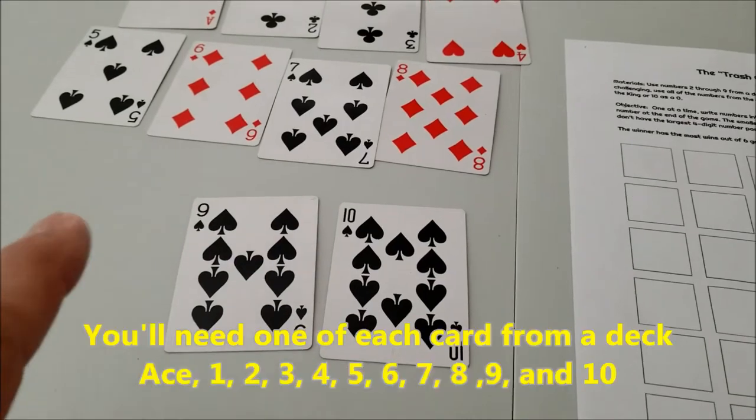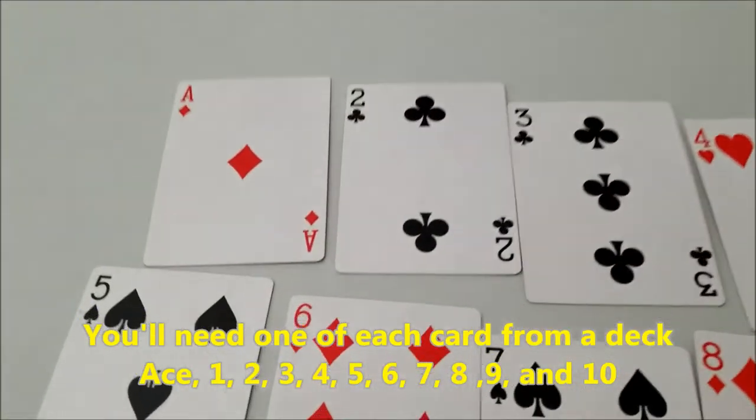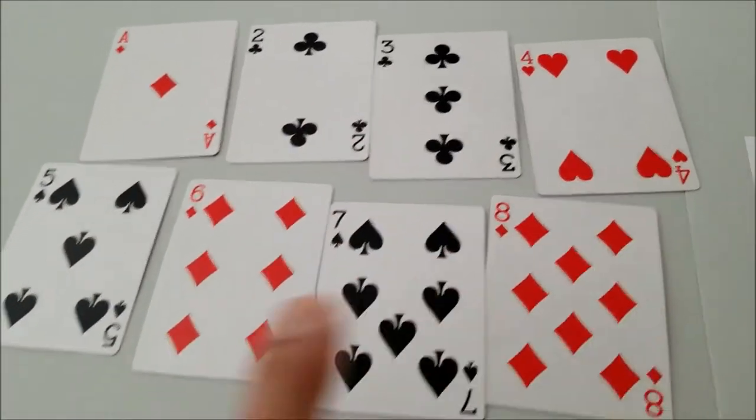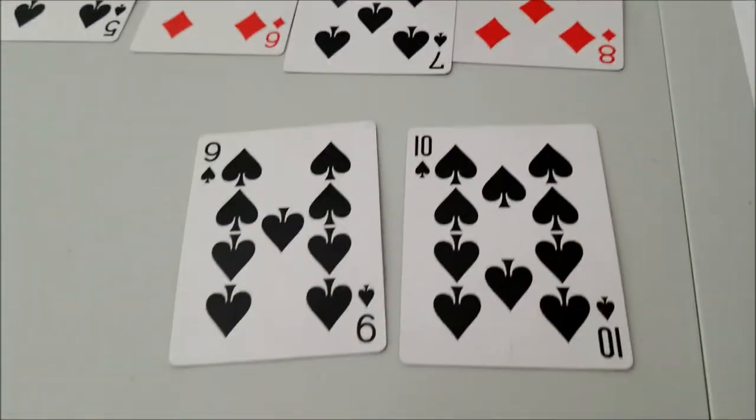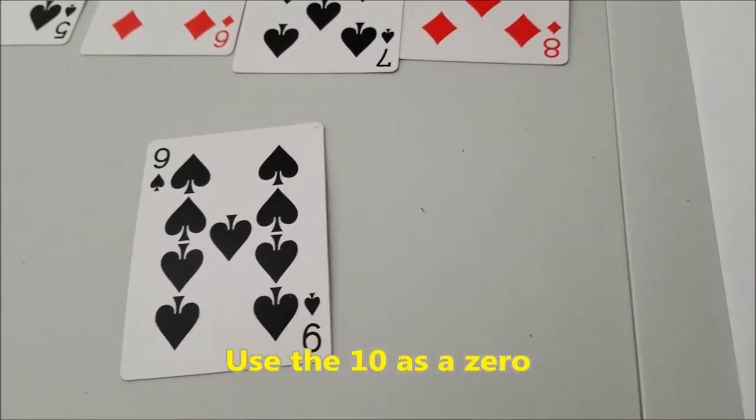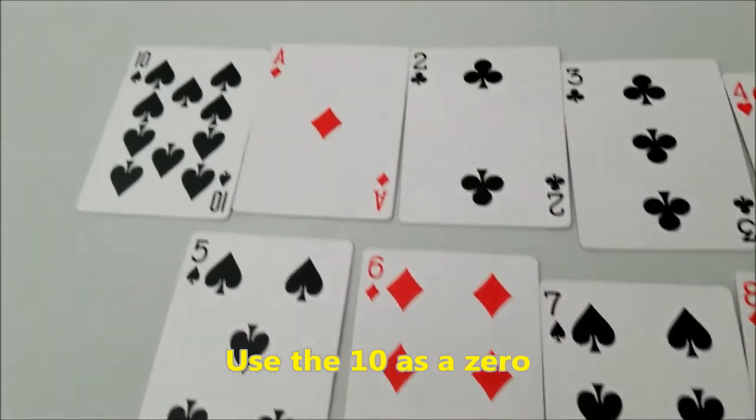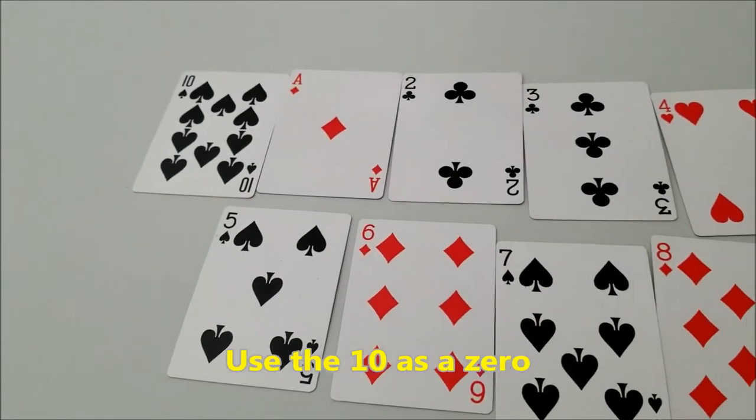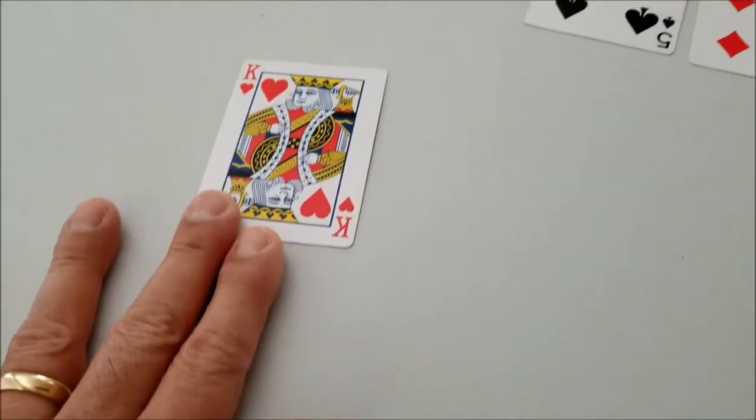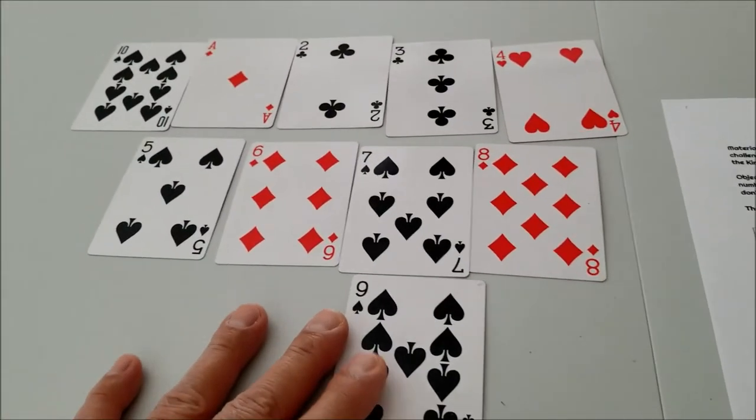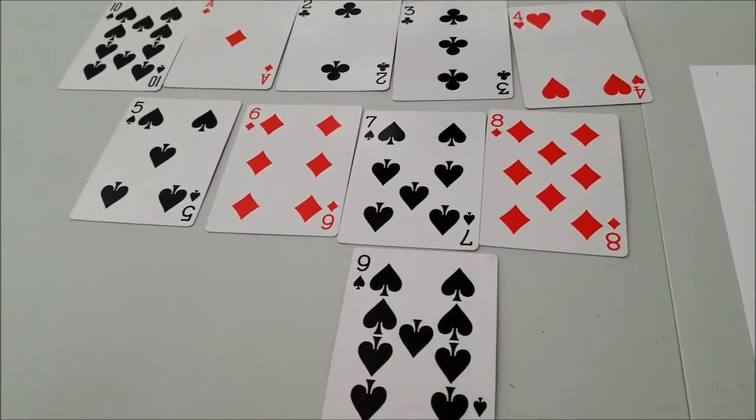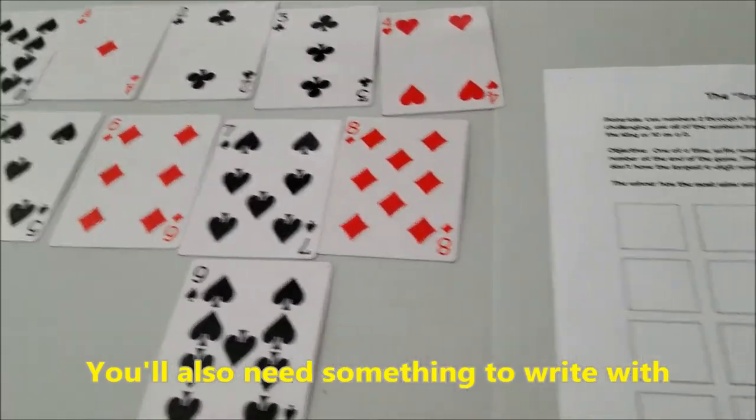And then you're going to need some playing cards. We're going to use ace as 1, 2, 3, 4, 5, 6, 7, 8, 9. And then I use the 10 as a zero. They don't have a zero in a deck, so I just use 10 because it has a zero in it. You can also use a king as a zero. It's up to you. But what you're going to want is numbers zero through nine. And that's all you need. So let's go ahead and figure out how to play.